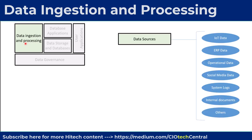Examples of data sources and destination databases include IoT data, which may need to be moved from its source in a manufacturing plant to an organization's ERP databases. ERP data itself is also a key data source and destination. Operational data, social media data, system logs, internal documents, and others are also forms of data that organizations can ingest into their overall data architecture.